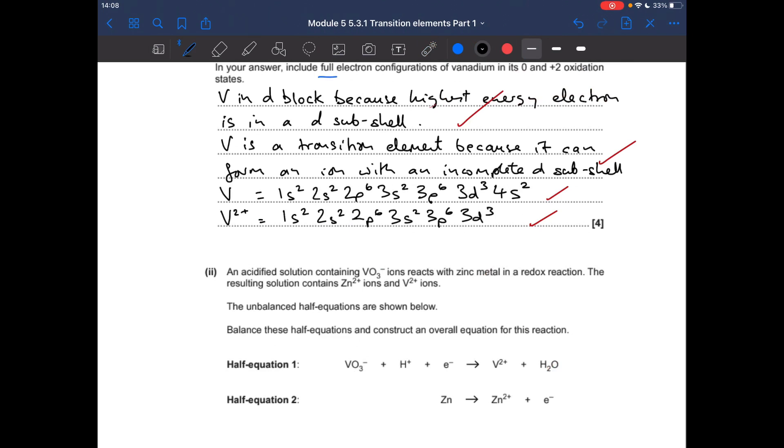Moving on to part 2, we've got to complete these two half equations and then come up with the overall redox reaction. So the vanadium one first, the oxidation state of vanadium at the start is plus 5 and it's going to plus 2. So there's a change of 3, there's a reduction in oxidation number of 3, that means it must gain 3 electrons.